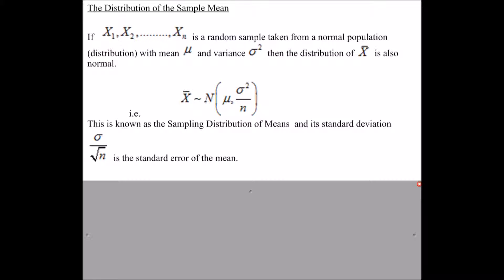Here are the notes taken from Mrs. Harris' worksheet. Mrs. Harris used to be a fantastic teacher who worked at Kegs. Her notes say: the distribution of the sample mean — if x1, x2 up to xn is a random sample from a normal population with mean mu and variance sigma squared, then the distribution of x-bar is normal, with the same mean but variance sigma squared over n. This is the sampling distribution of means, and its standard deviation is sigma over root n.